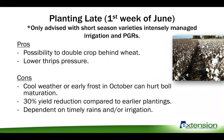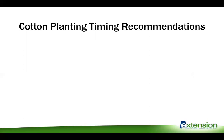The cons with late planting are big ones: cool weather and early frost in October can really hurt your boll maturation. Most studies have shown about a 30% yield reduction on average compared to earlier plantings. You're also very dependent on timely rains and irrigation. If you do choose this system, please consult with your extension specialist to come up with the right program.